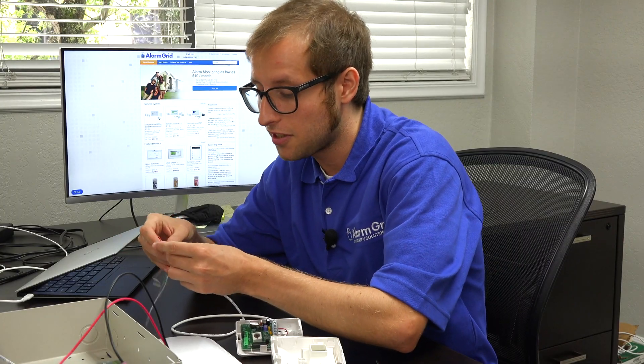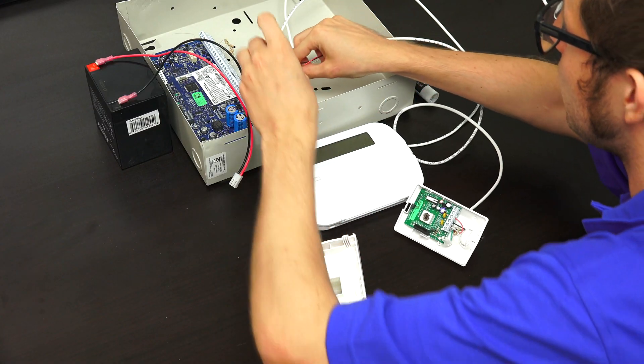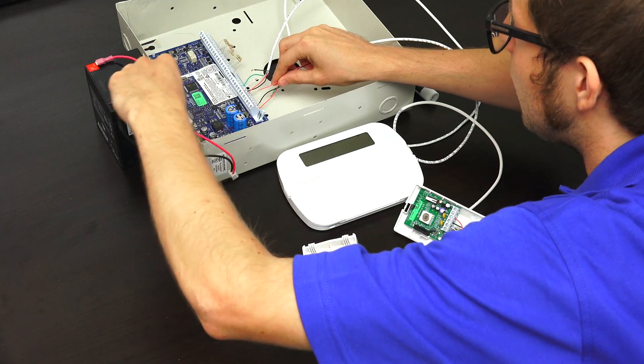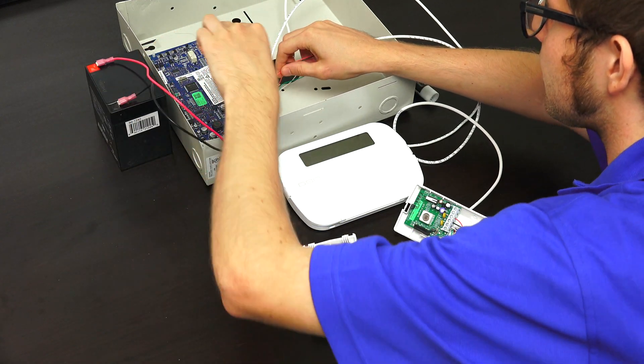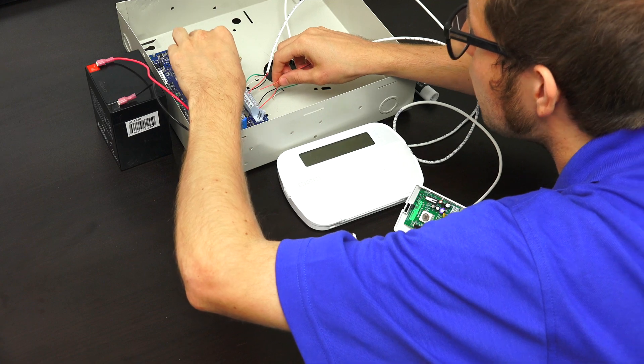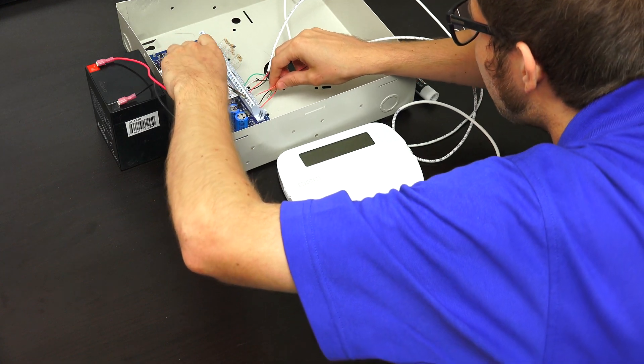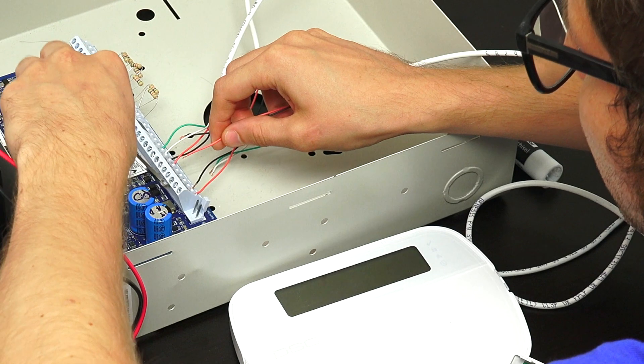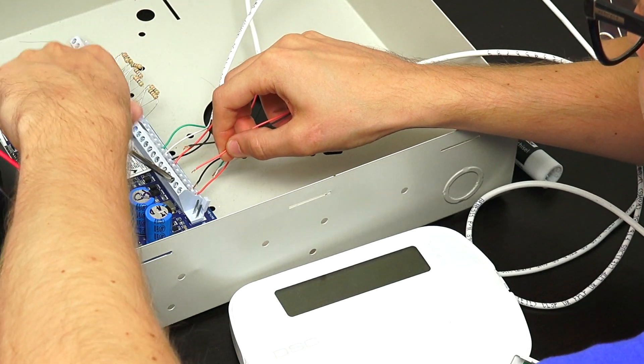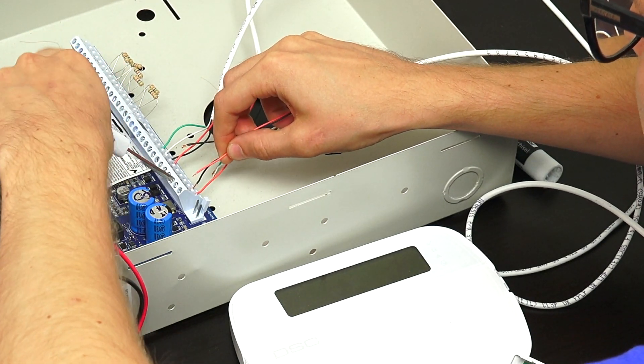For the power connections, we're going to connect to the AUX port right here on the panel. We're going to move this backup battery out of the way. So we've got the third one here for positive, and that's for the red wire.